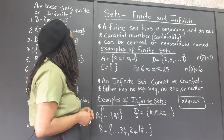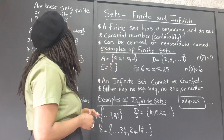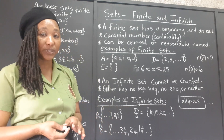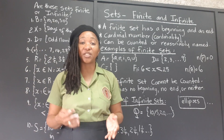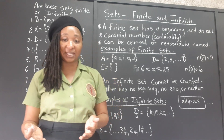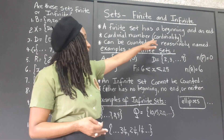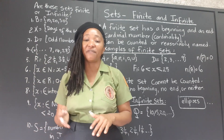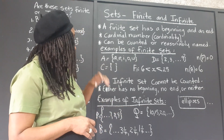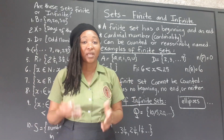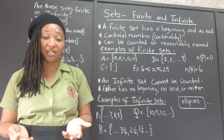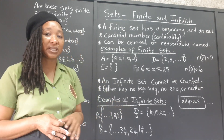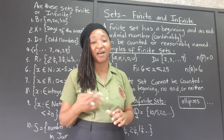Let's look at some examples of finite sets and infinite sets. A finite set has a beginning and an end. The cardinal number, or counting number, is used to represent the elements of the set. Since we can count the elements of a finite set, we say that the set has cardinality — we are able to assign a number to the set and say how many elements are in it. Even if there are no elements in the set, the cardinality is zero. We are still able to assign a number to it, so zero can be considered as having a cardinality.